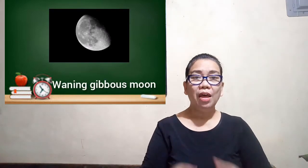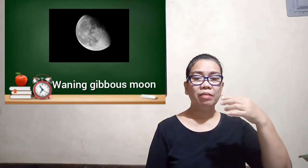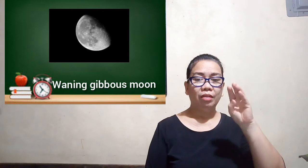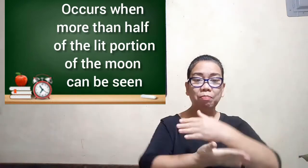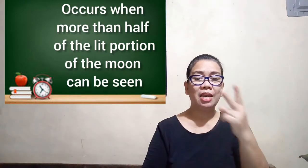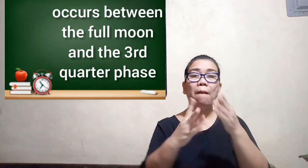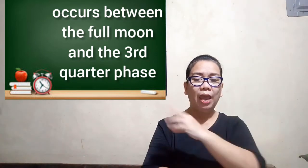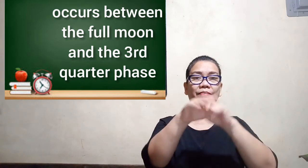Number six is the waning gibbous moon. It occurs when more than half of the lit portion of the moon can be seen and the shape decreases in size from one day to the next. This phase occurs between the full moon and the third quarter phase.